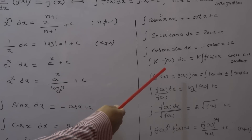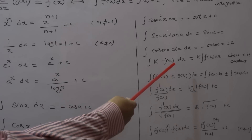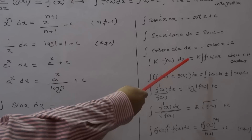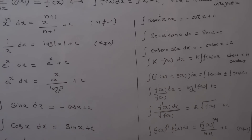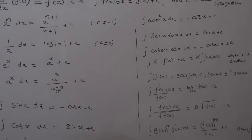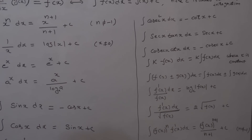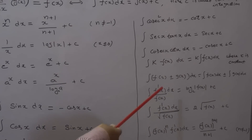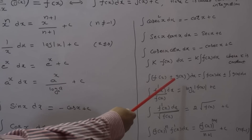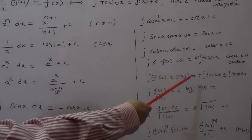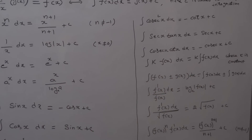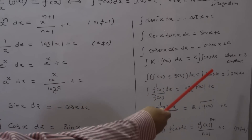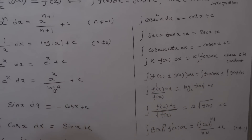Integral of k into f(x) dx is equal to k into integral of f(x) dx, where k is a constant. Integral of [f(x) ± g(x)] dx is equal to integral of f(x) dx plus or minus integral of g(x) dx.